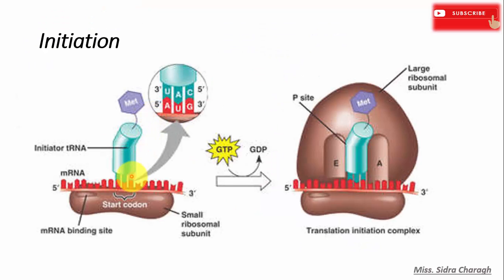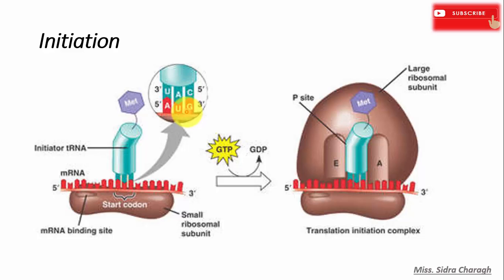The first stage of translation involves the assembly of three components that carry out the process: messenger RNA, ribosomal RNA, and transfer RNA. The messenger RNA triplet codon AUG is the universal start codon used to mark the beginning of the coding sequence of a gene. The transfer RNA with an anticodon UAC carries the amino acid methionine.